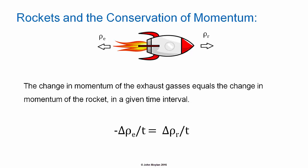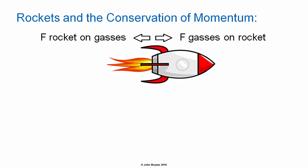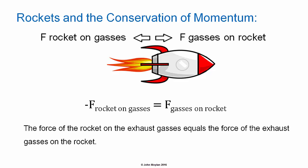Therefore, minus delta rho subscript E over T equals delta rho subscript R over T. The change in momentum over time is equal to the force. Therefore the force of the rocket on the gases is equal in magnitude to the force of the gases on the rocket, but opposite in direction and therefore opposite in sign. Minus F subscript rocket on gases equals F subscript gases on rocket. The force of the rocket on the exhaust gases equals the force of the gases on the rocket.